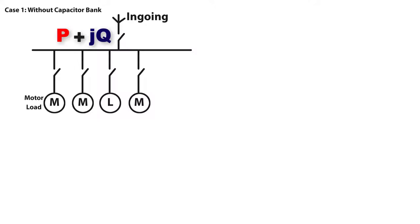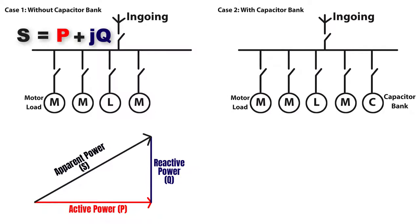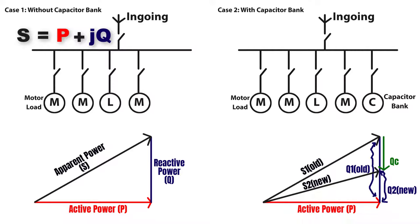The reactive power Q in kVAR gives a resultant apparent power S in kilo volt ampere. Now if we connect capacitors to the loads, the total reactive power will decrease, so the total apparent power will decrease and the power factor will increase.